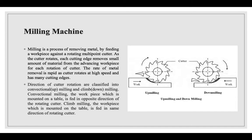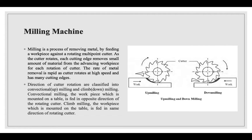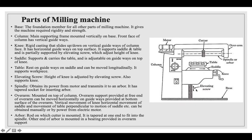Milling is the process of removing metal by feeding a workpiece against a rotating multi-point cutter. As the cutter rotates, each cutting edge removes a small amount of material from the advancing workpiece. The rate of metal removal is rapid because the cutter rotates at high speed and has many cutting edges. According to the direction of cutter rotation, milling is classified into conventional milling (up milling), where the workpiece is fed in the opposite direction to the rotating cutter, and climb milling (down milling), where the workpiece is fed in the same direction as the rotating cutter.